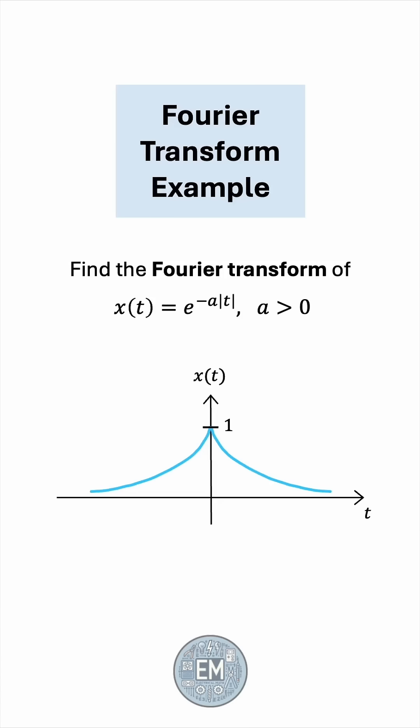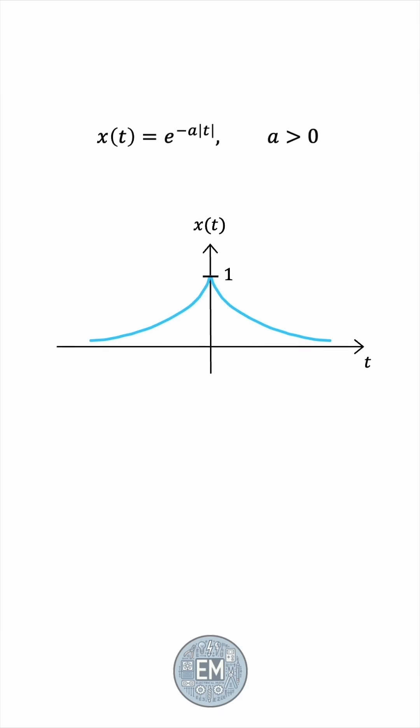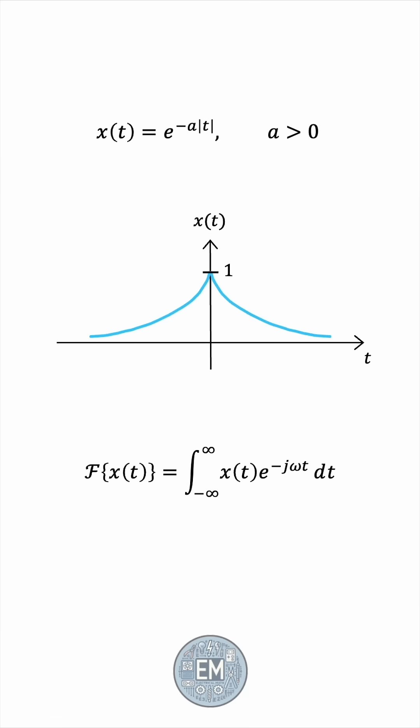Find the Fourier transform of this two-sided decaying exponential. Let's solve this problem step by step together. The Fourier transform of any continuous time signal is defined as the integral from negative infinity to infinity of that signal times e to the negative j omega t dt.